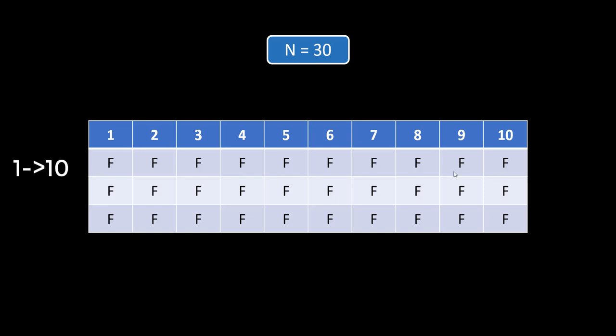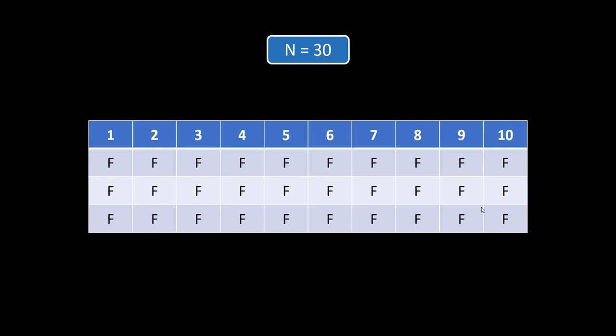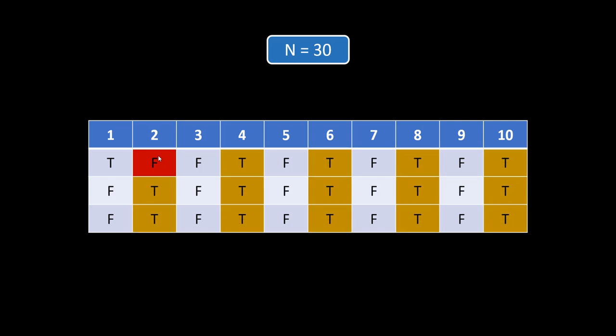The first row is 1 to 10, then 11 to 20, and then 21 to 30. This array represents true for all composite numbers and false for all prime numbers. Initially everything is marked as false, stating that all numbers are prime. As we know 1 is not a prime, so we mark true for 1 and start with 2. Because 2 is a prime, we keep it false and mark all multiples of 2 as true — these become composite numbers.